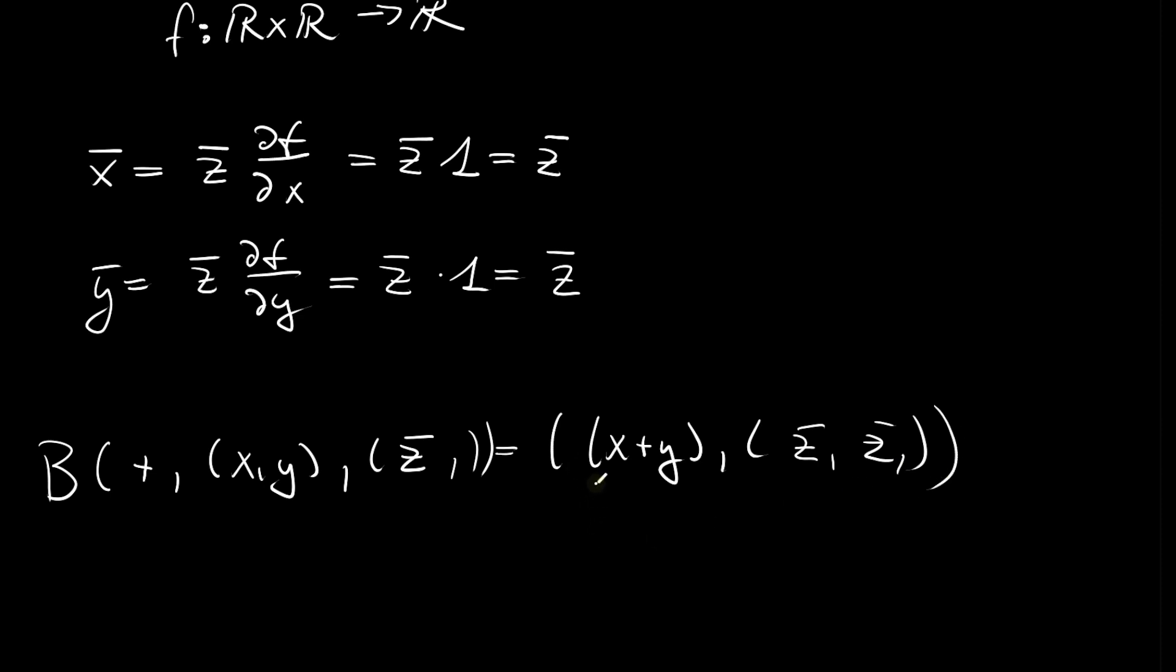So let's also give these here names. So this one will be z, the output of our primal computation, and that one will be x bar and that one is y bar.